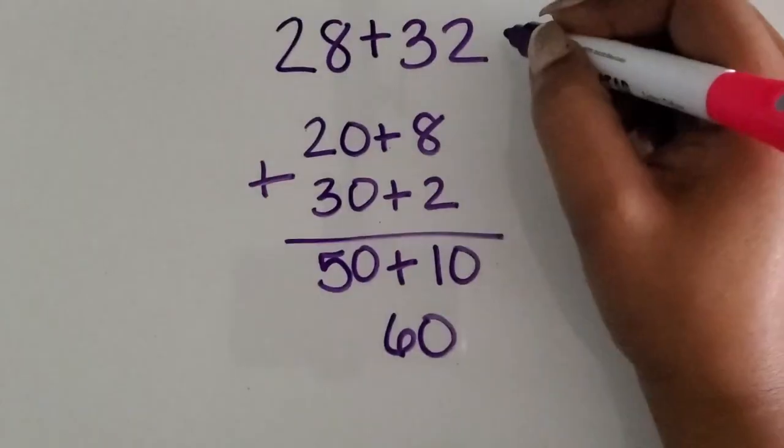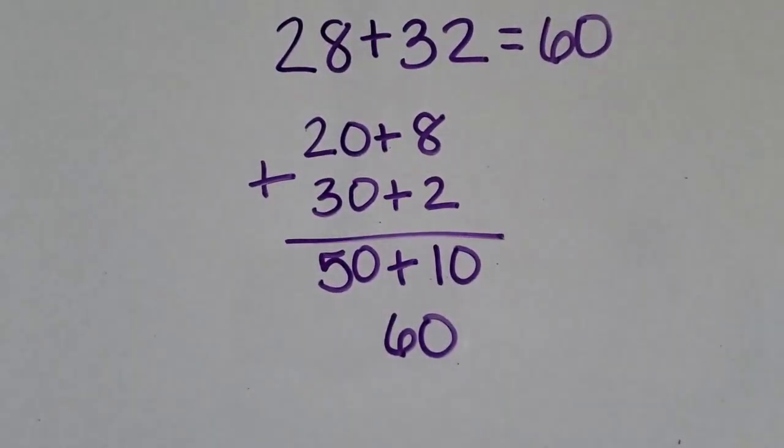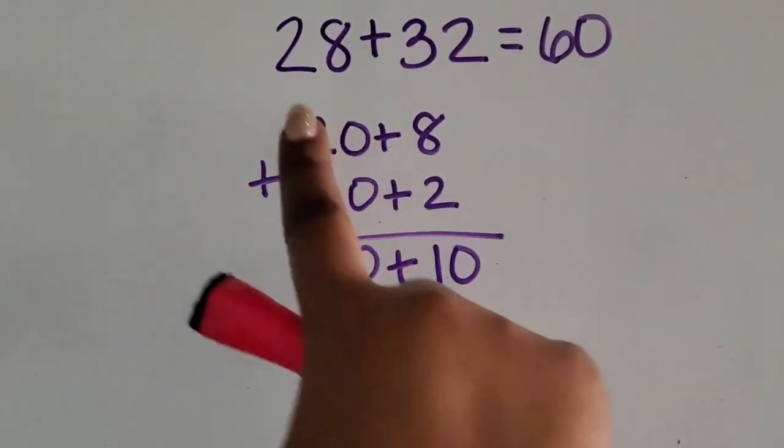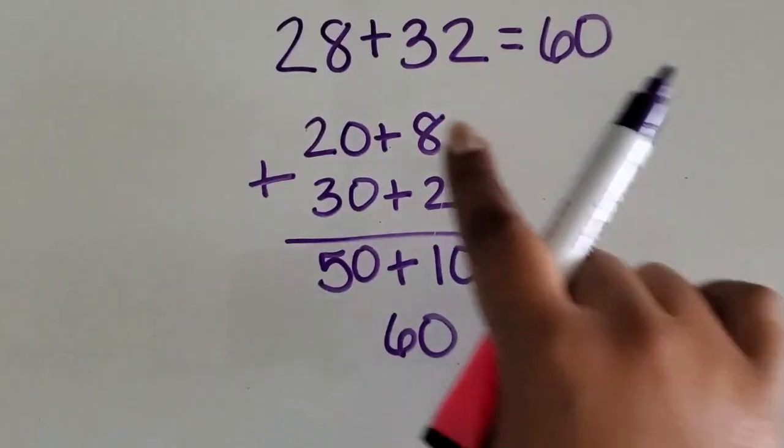So the sum of 28 plus 32 is 60. We added two two-digit numbers together using the expanded form.